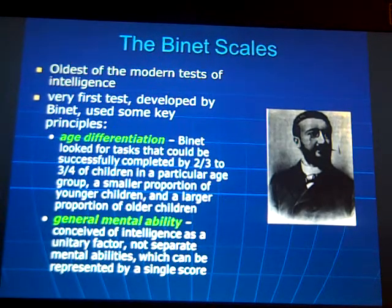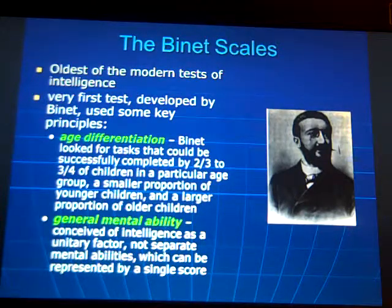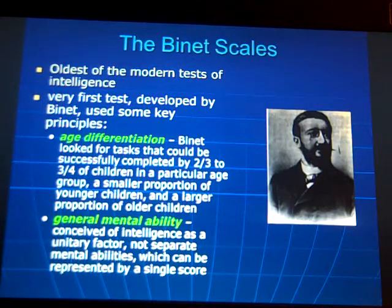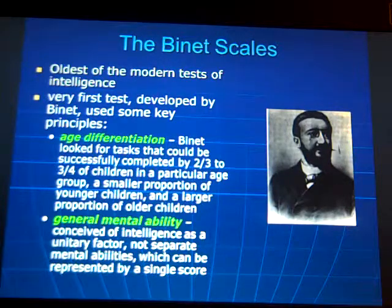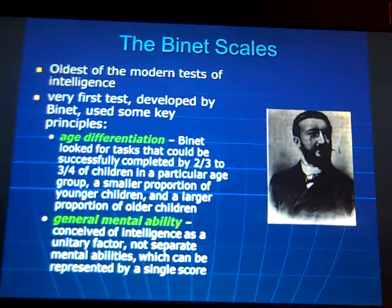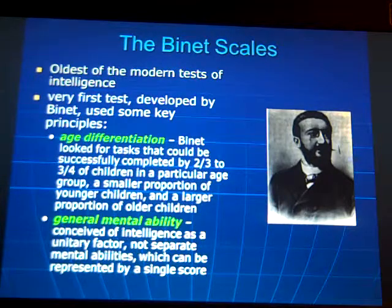The Binet Scales — the oldest of the modern tests of intelligence — was the very first test developed by Binet. His first test used some key principles. The first: age differentiation. He looked for tasks that could be successfully completed by two-thirds to three-fourths of children in a particular age group. The second: general mental ability. He conceived of intelligence as a unitary factor — not separate mental abilities — which can be represented by a single score.